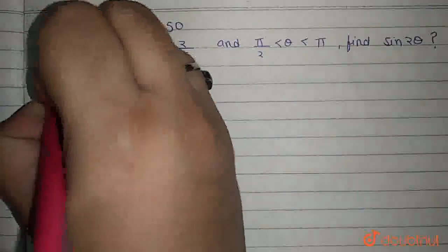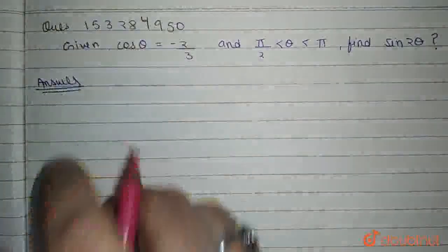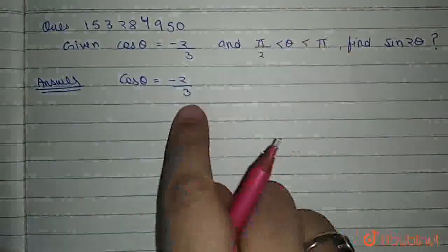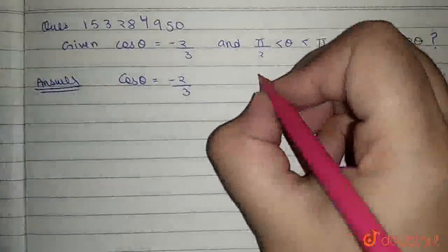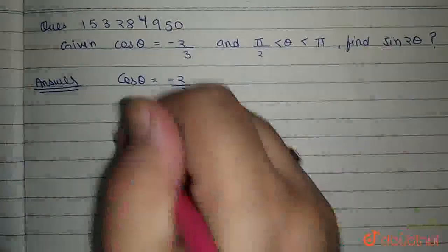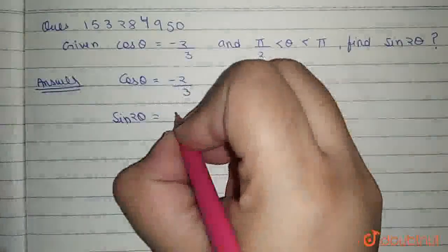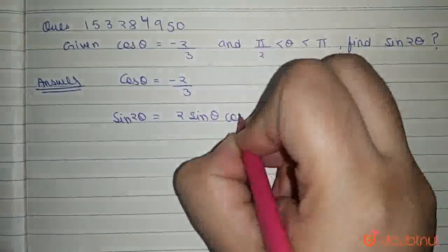So, we proceed with our answer. Cos θ is given to be -2/3. We have to find the value of sin 2θ, and sin 2θ, we have the formula, is equal to 2 sin θ cos θ.